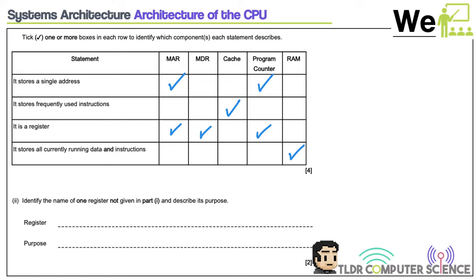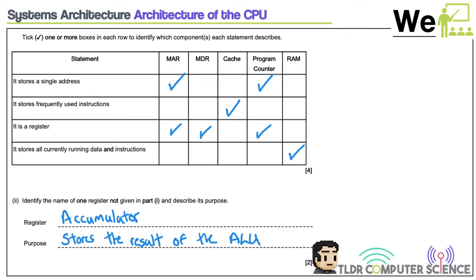Identify and name one register not given and describe its purpose. We can't say MAR, MDR, or program counter as they've all been provided. The additional one is the accumulator. The accumulator is inside or forms a component of the arithmetic logic unit. If you've added two numbers together, it holds the result of that arithmetic operation — it stores the result of arithmetic operations, a bit like on a calculator when you do a sum and it gives you the running total.